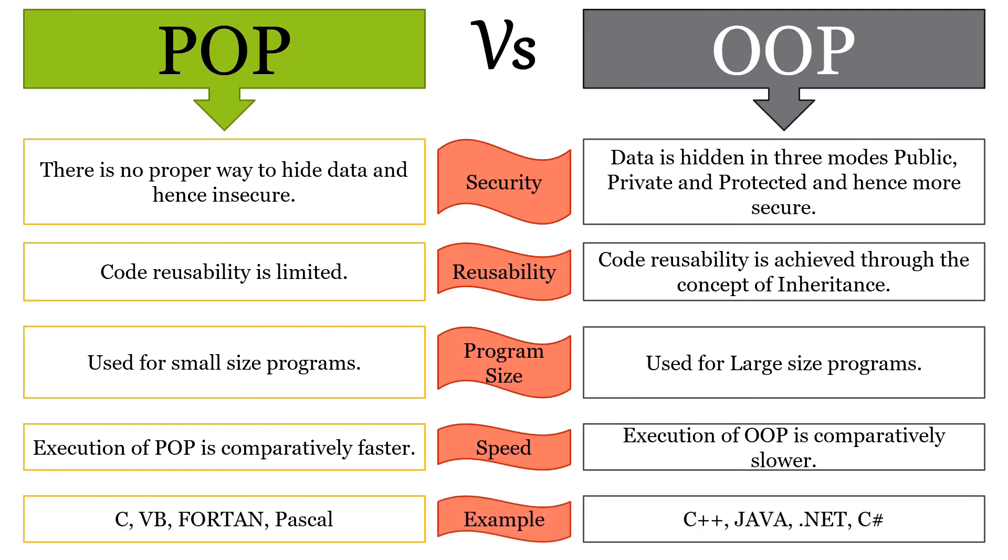Examples of procedure oriented programming are C, VB, Fortran, Pascal, etc. Examples of object oriented programming are C++, Java, .NET, C#, etc.